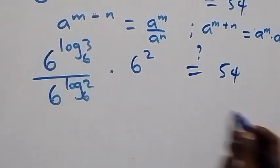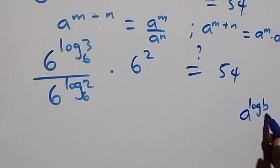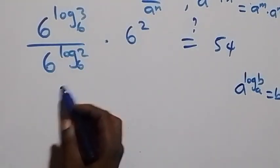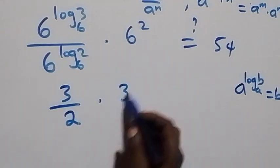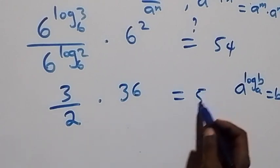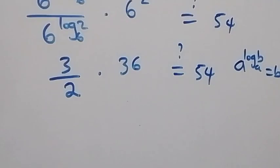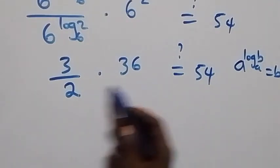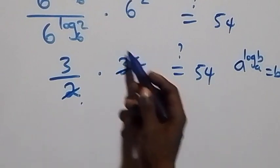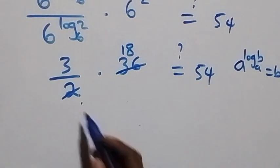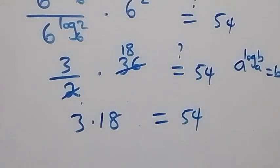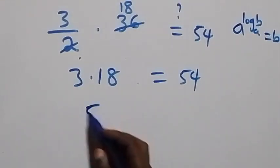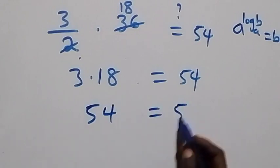This follows when we have a raised to power log b to base a, which equals b. So from here this simplifies to 3 over 2, times 6 squared which is 36, equals 54. Then 2 goes into 36 giving 18, and we have 3 times 18 equals 54, which is indeed 54. So left-hand side equals right-hand side.